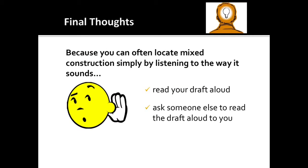While you may not always have time to spend analyzing critically each and every one of the sentences in a drafted essay, you can often locate areas of mixed construction simply by listening to the way your sentences sound. In fact, sentences with mixed construction often sound just a little bit off. Because of this, we encourage you to read your draft aloud one sentence at a time. Or, even better, ask someone else to read the draft aloud to you. Then, listen carefully for areas that just don't sound quite right.